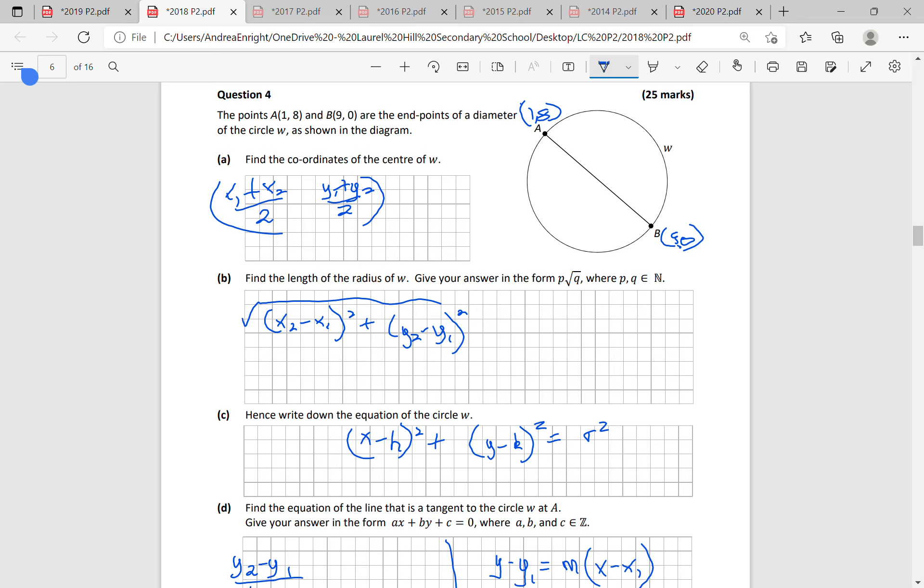Okay, 2018 question 4. So the points A and B are the endpoints of a diameter of the circle. Find the coordinates of the centre.